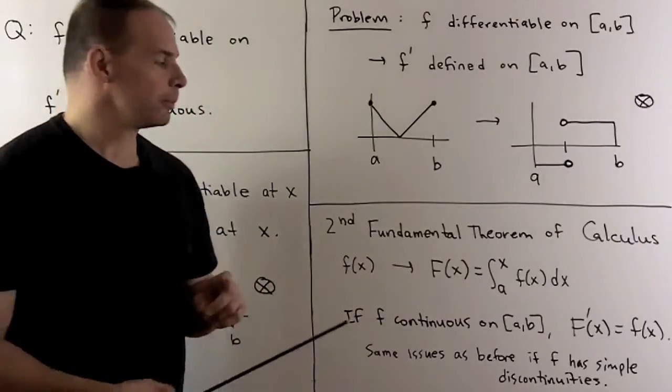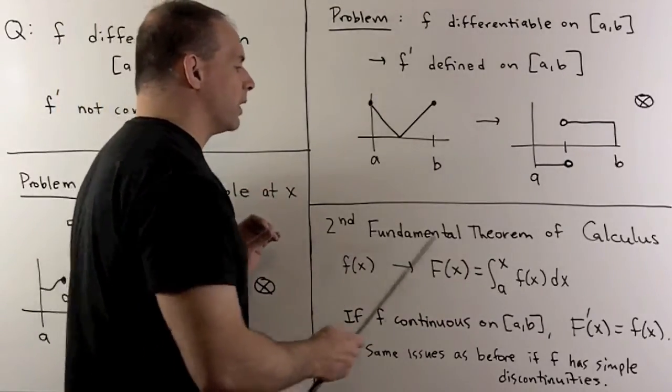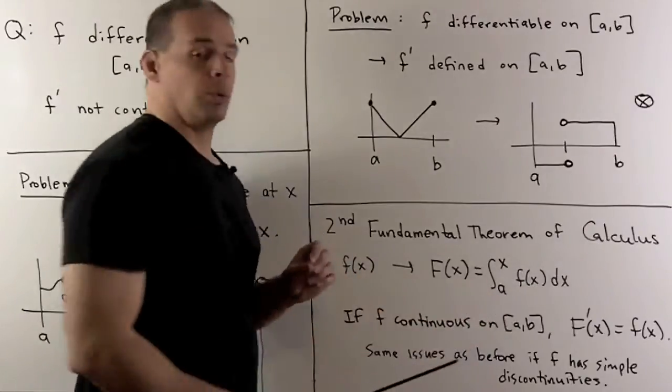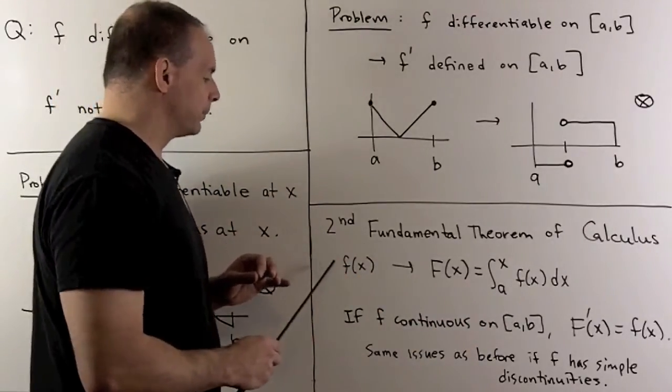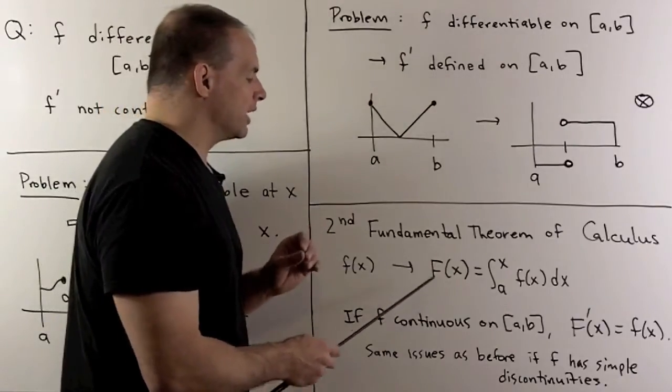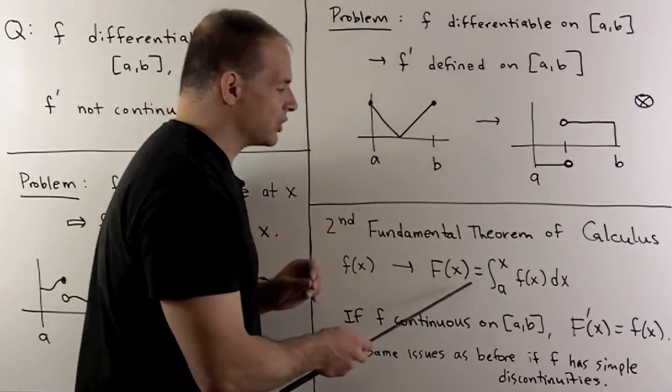As a final pass, we could pull out the second fundamental theorem of calculus, which would say, if we have some given function f(x), we could form a new function, capital F(x), given by this integral here.